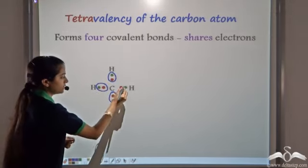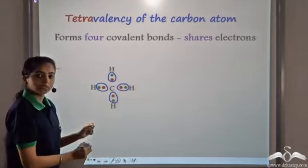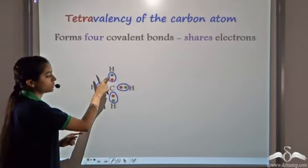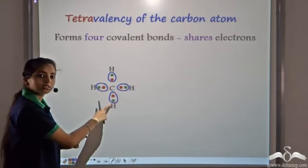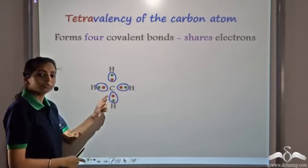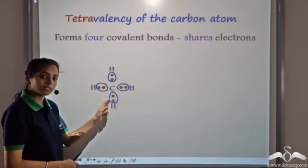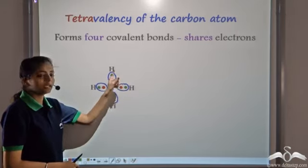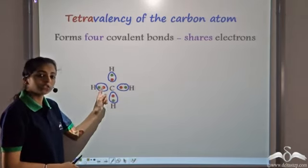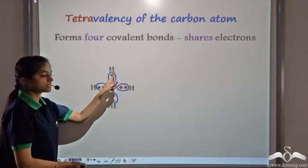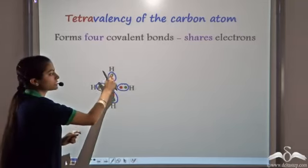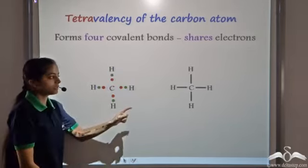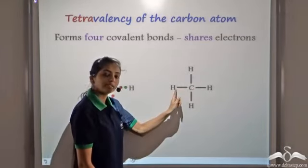By doing this, each hydrogen has a duplet structure and each carbon — in this case only one carbon — completes its octet. So carbon now has 8 electrons. It's stable as it now satisfies the octet rule, and each hydrogen has a duplet structure. This bond, containing 2 electrons, can also be represented by a single line.